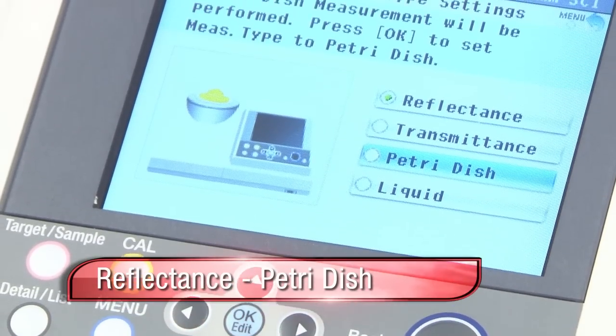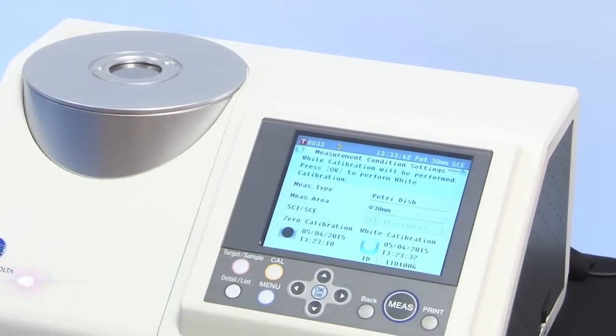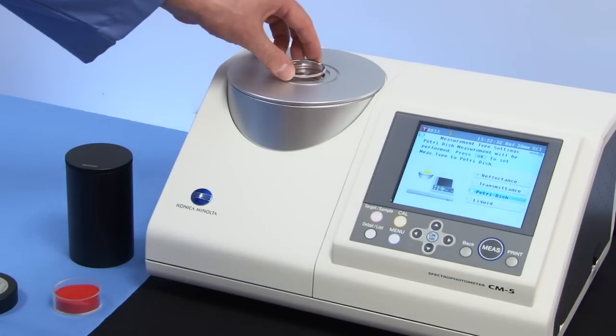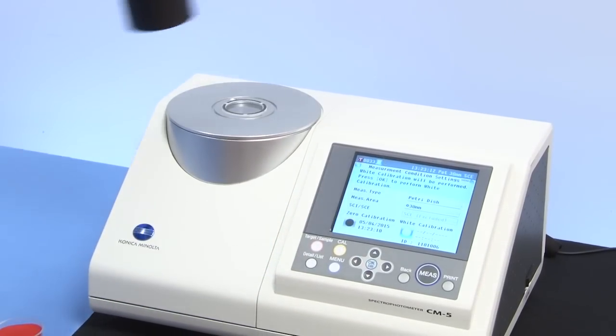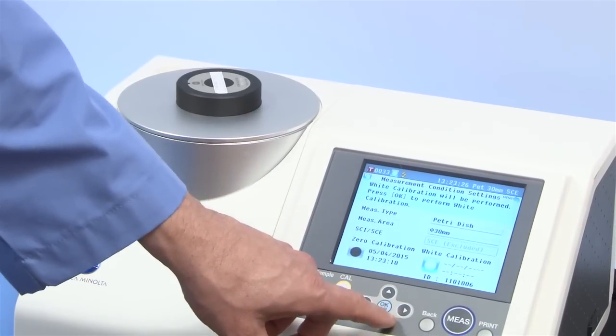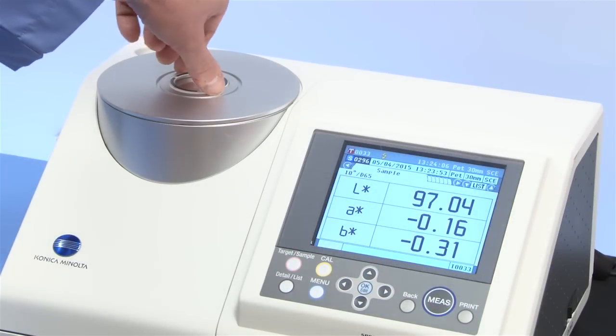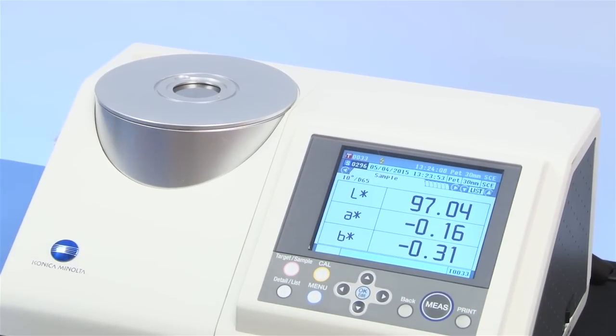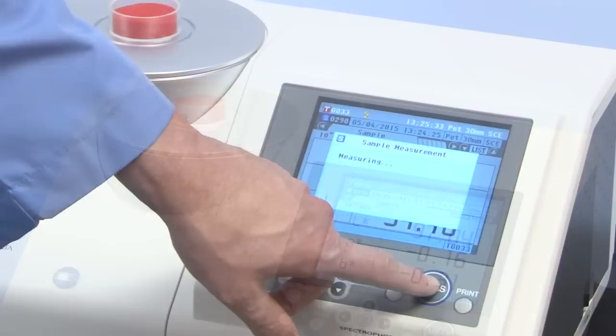To perform a reflectance measurement in petri dish mode, put the special target mask in place followed by the glass accessory piece. Perform zero calibration, and then an external white calibration through the glass piece. This will normalize the instrument when measuring samples through a petri dish. Proceed to measure your targets and samples in reflectance mode as normal.